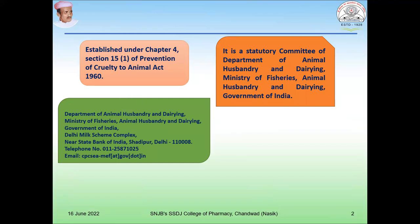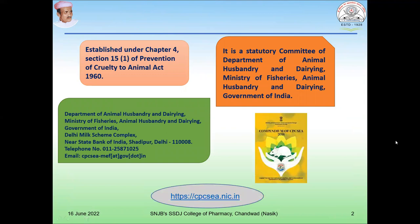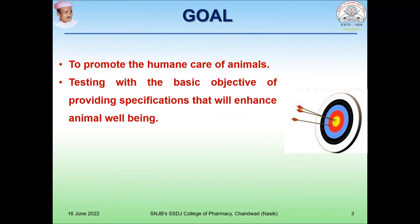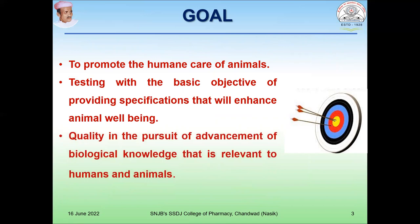This guideline is available on the website cpcsa.nica.in under the compendium of CPCSEA. All the material being discussed is directly taken from the CPCSEA website and is simplified for students to understand the aim, objective, and process of CPCSEA. The goal of this guideline is to promote the humane care of animals used in biomedical and behavioral research and testing, with the basic objective of providing specifications that will enhance animal well-being in the pursuit of advancement of biological knowledge relevant to humans and animals.